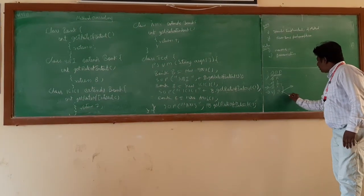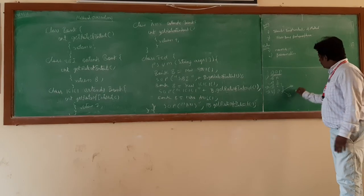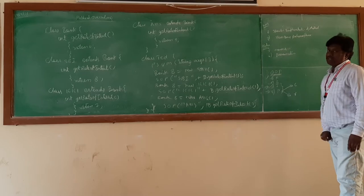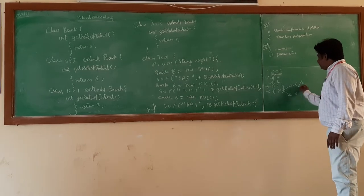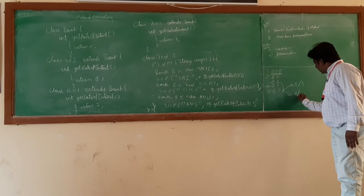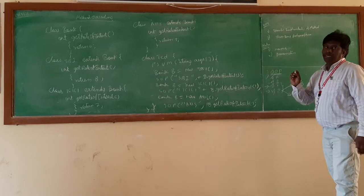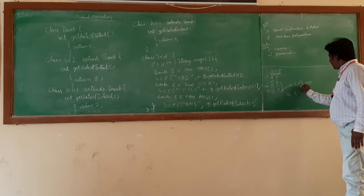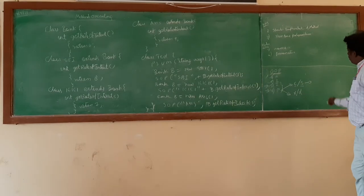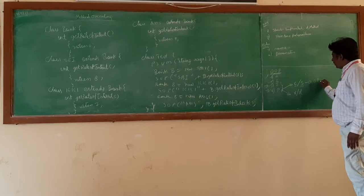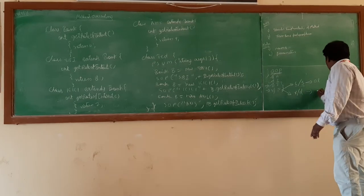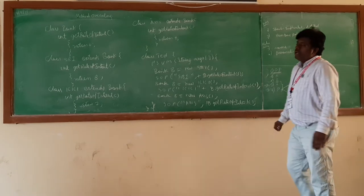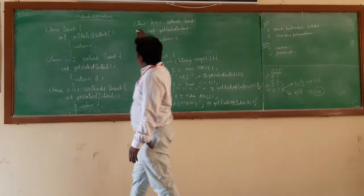Polymorphism has two different types: one is compile-time polymorphism, and the other is runtime polymorphism. Compile-time polymorphism is also called static polymorphism, and runtime polymorphism is also called dynamic polymorphism. Static polymorphism is achieved with the help of overloading, and runtime polymorphism is achieved with the help of overriding. That is the origin of today's topic — method overriding.